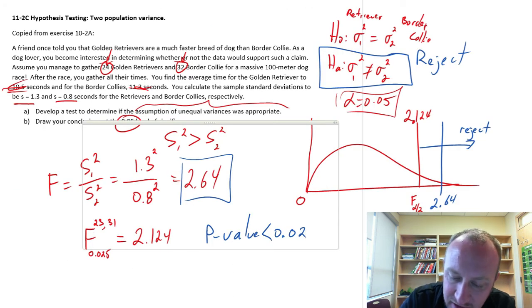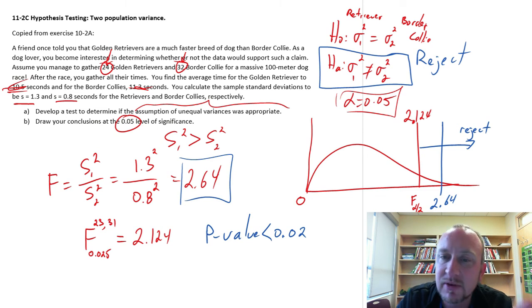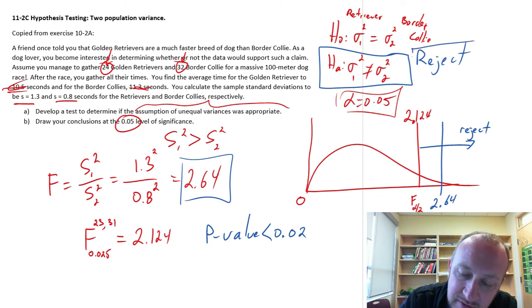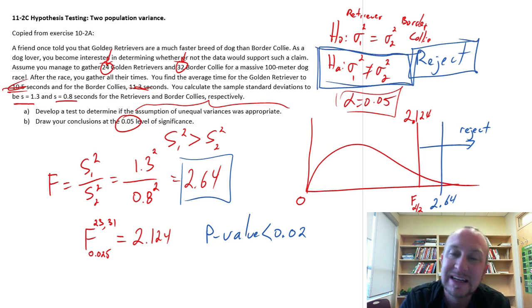So that's it. That's all there is to this problem. Using both the critical value approach and the p-value approach, we reject that null hypothesis. We do have evidence to show that the assumption of unequal variances was appropriate in this case. Good. I hope that was helpful. Thank you for watching.